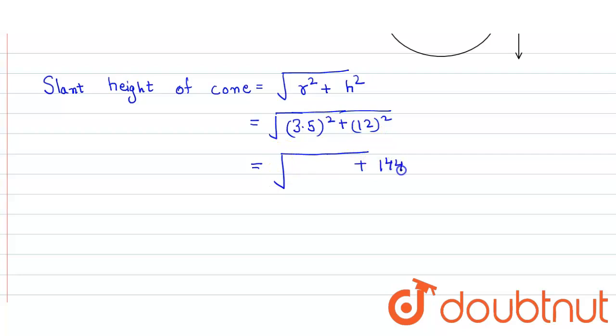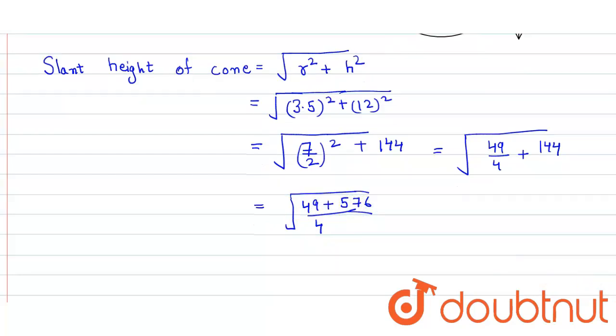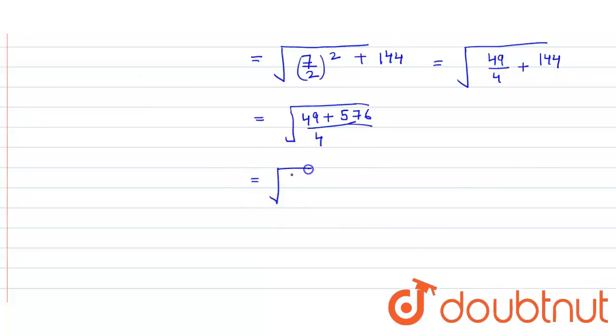So here we get 49 upon 4 plus 144. When we solve it, LCM is 4, and we get 49 plus 576. In the numerator we get 625 divided by 4, so that equals 25 upon 2 centimeter, and that's our slant height.